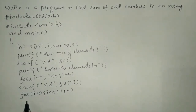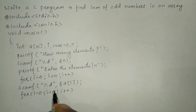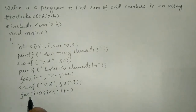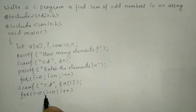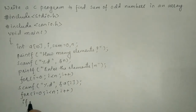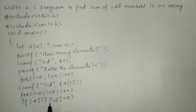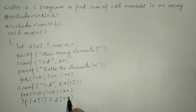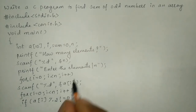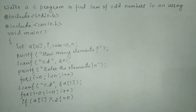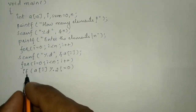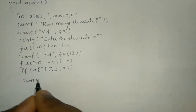Now we are going to check the condition whether the element stored in each consecutive memory block is divisible by 2 or not. If it does not give remainder 0, then it is an odd number and such odd numbers are to be added. So I will write: if A of i modulo 2 not equal to 0. Modulo division gives us the remainder — if the remainder is not equal to 0, those are odd numbers and we want to find their sum.